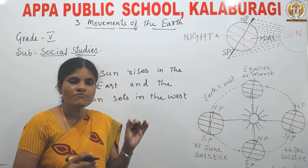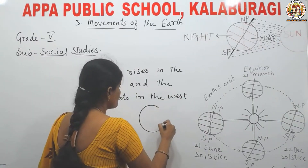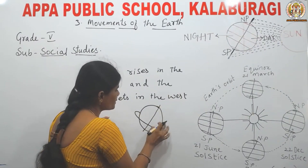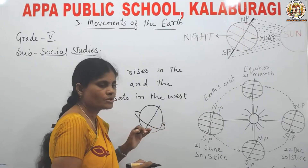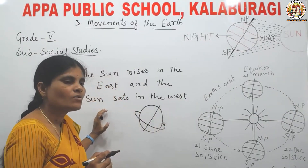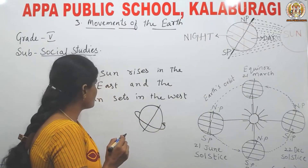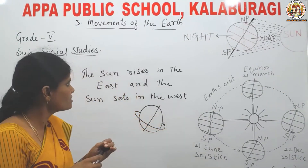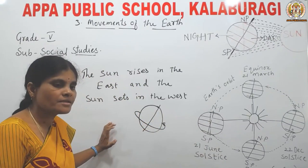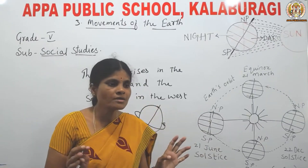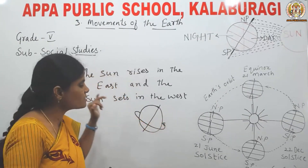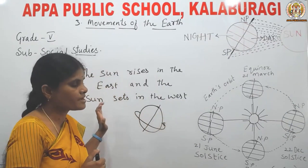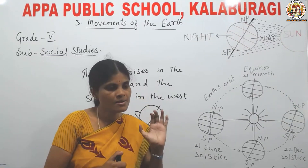The earth rotates from west to east. Because of that, it appears that the sun rises in the east and the sun sets in the west. Actually, we are saying the sun rises in the east and sets in the west — but that is not correct, because the earth itself moves from west to east. That is why it appears like that.